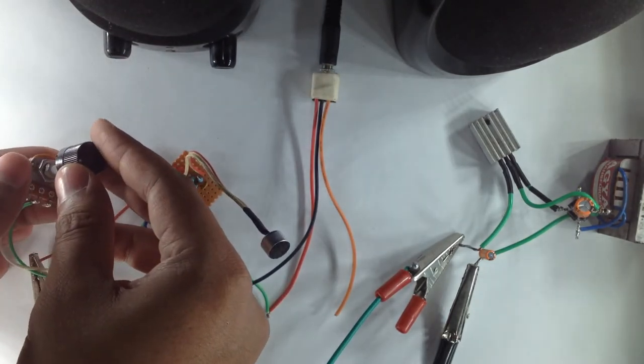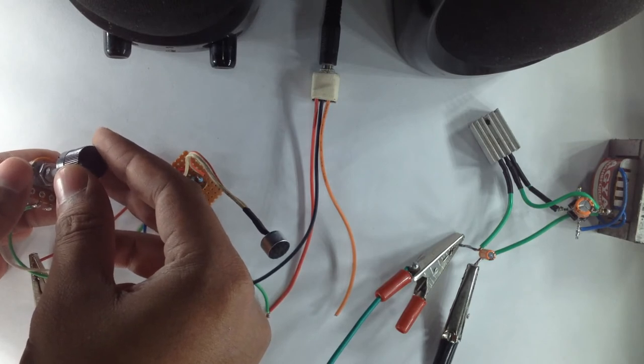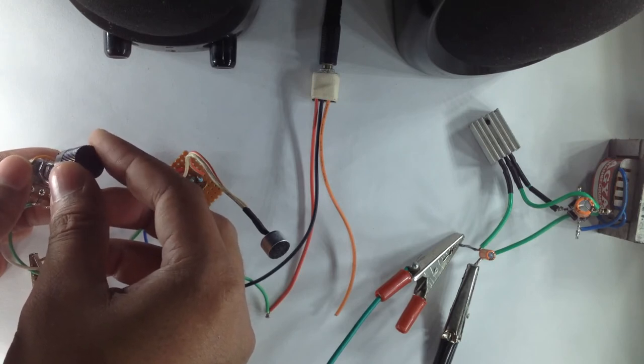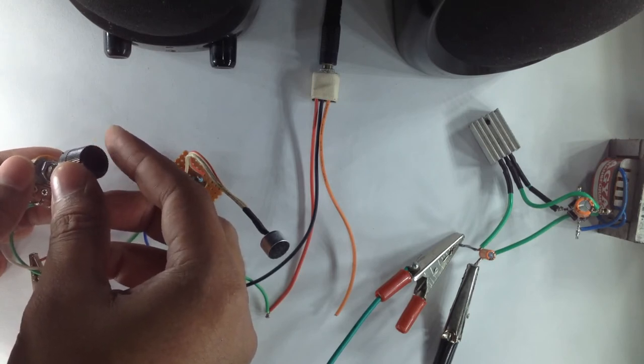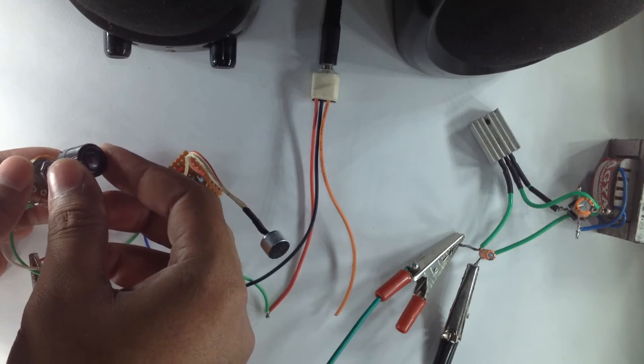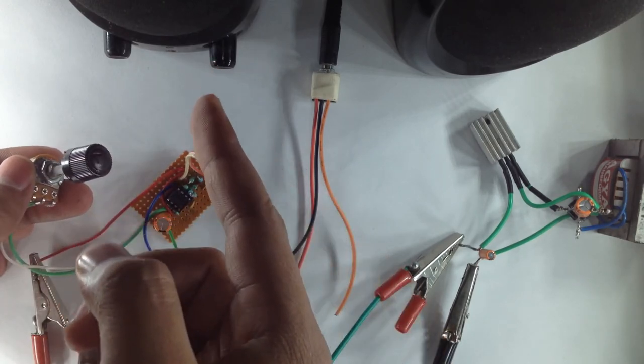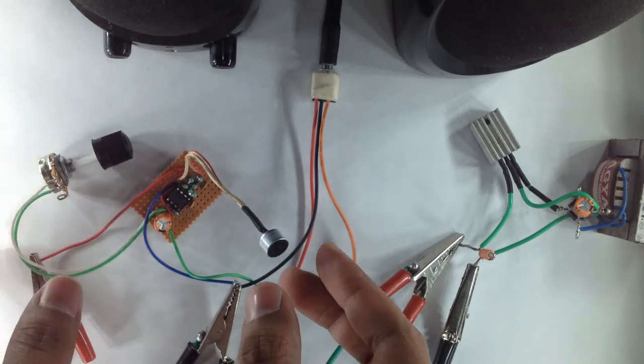You will see, as I turn down the potentiometer, the circuit will start oscillating. See. This is because the microphone is very close to the speaker. You can hear my voice here.